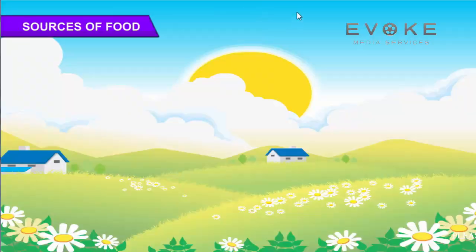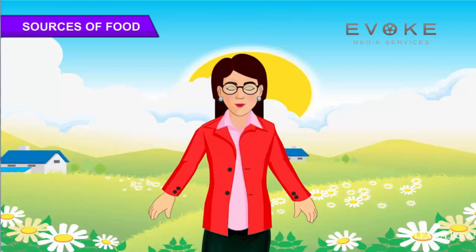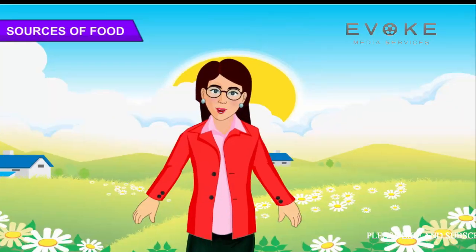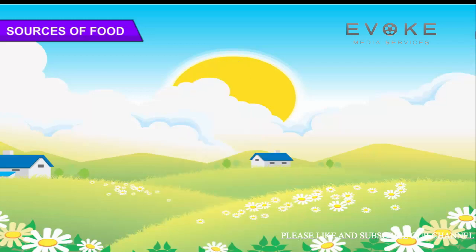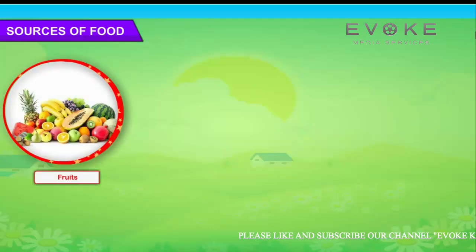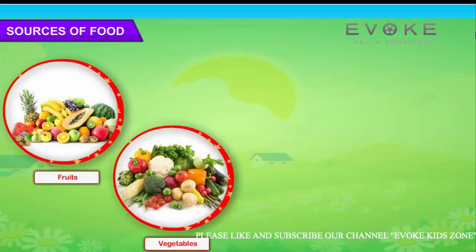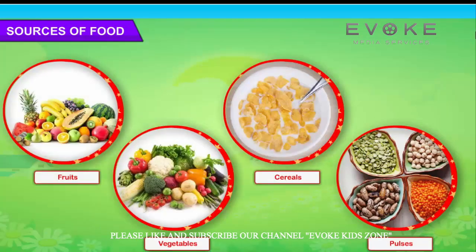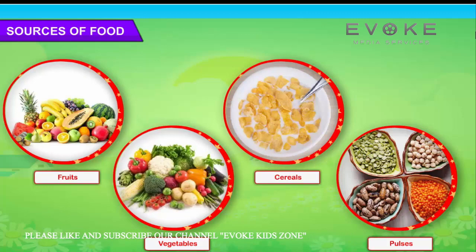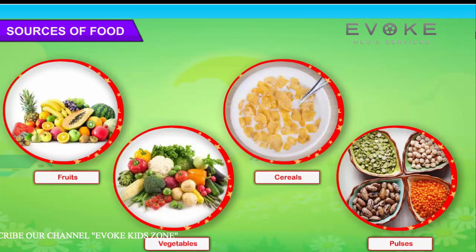Sources of Food. We get food from plants and animals. We get fruits, vegetables, cereals and pulses from plants. Farmers grow them in the fields and we can obtain them from the market.